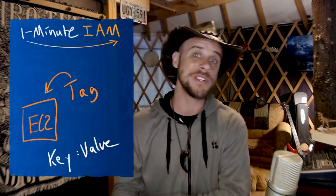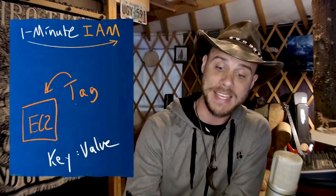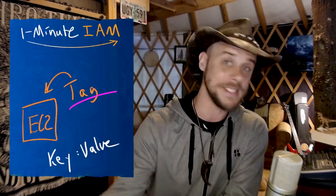Hey friends, CloudBard here. Time for another one minute identity and access management lesson. Previously, you may have heard me talk about using the condition element of a policy statement to control allow and deny sentiments based on the types of tags that a resource might have attached to them. And specifically in those examples, we were talking about EC2 instance tags.